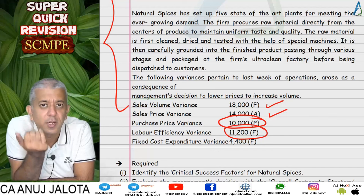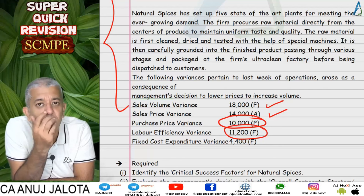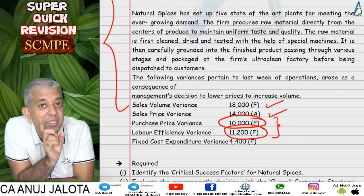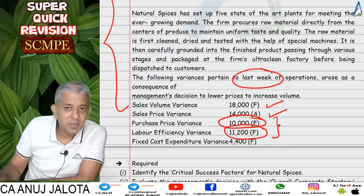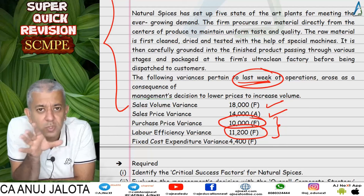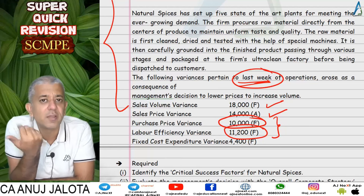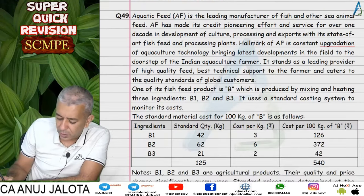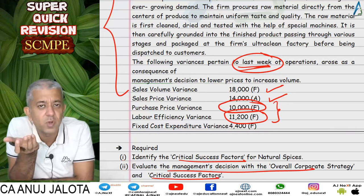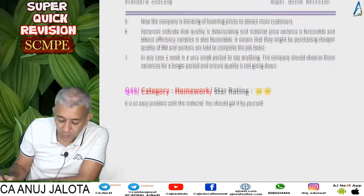The reasoning: if selling at a lower rate, margins fall, so the company tries to cut costs — purchasing lower-quality material and pressuring workers to complete jobs faster. Although the variances appear favorable, they may indicate quality deterioration. However, one week is a very short period to draw any conclusion. The company should monitor variances over three to four months more before arriving at conclusions. The Critical Success Factor for this company was its quality, and the decision to lower prices must be assessed against that CSF.